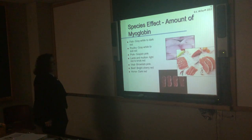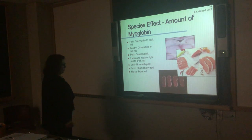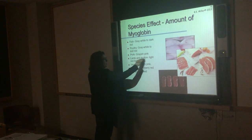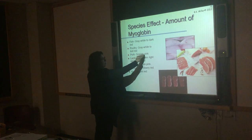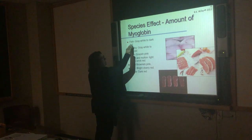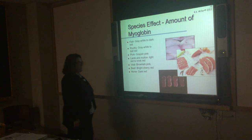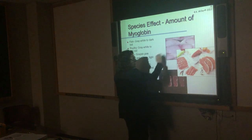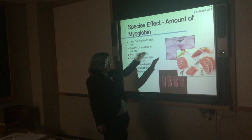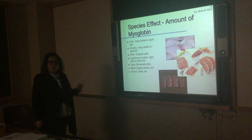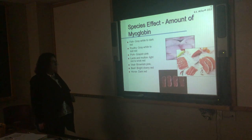Let's look at the species effect. Descriptors of meat from different species: horses — dark red; beef — bright cherry red; veal (beef from young animals) — brownish pink; lamb — light red to brick red; pork — grayish pink; poultry — gray white to dull red; fish — gray white to dark red. These differences in color are very apparent and directly related to the amount of myoglobin that's present.